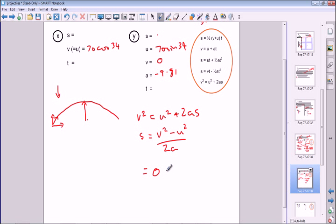When we substitute the numbers, v is 0, so we've got 0 minus 70 sin 34 squared, divided by twice gravity, which is minus 9.81. And when you plug all those numbers into the calculator, you end up with an answer of 78.1 meters.